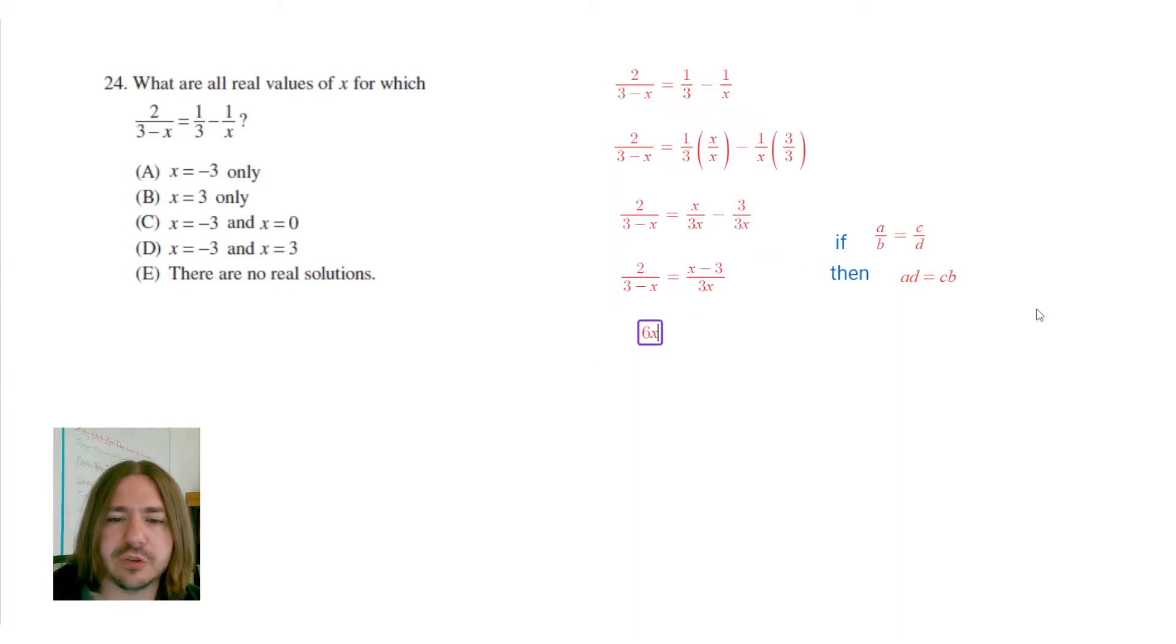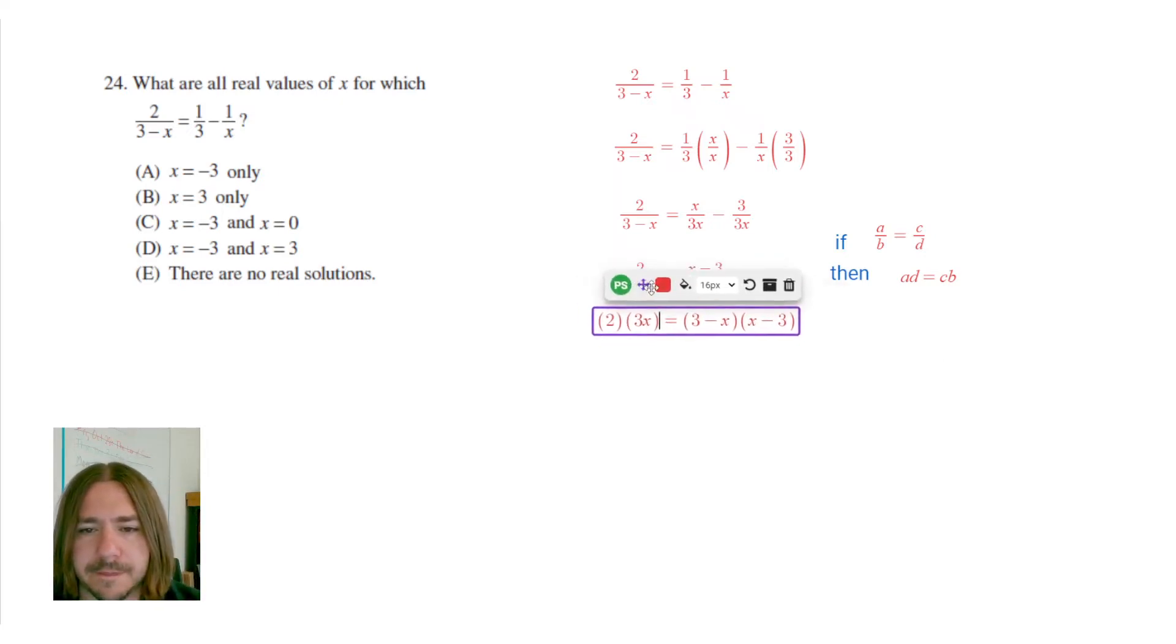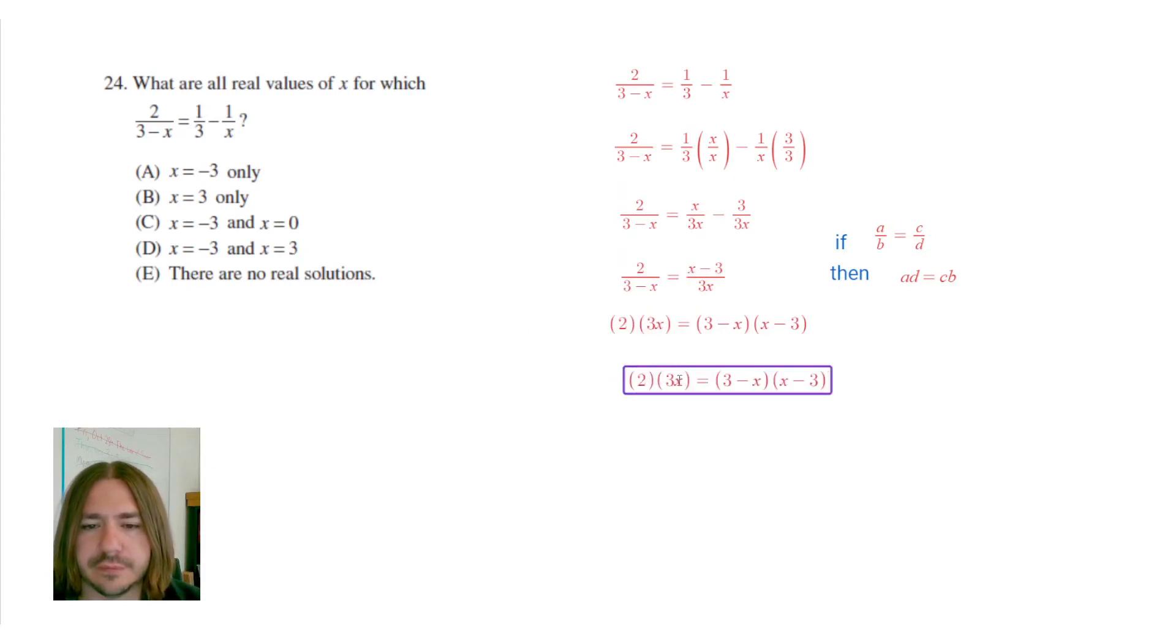We're going to multiply 2 times 3x, which would be 6x, and I'll write it out separately, 2 times 3x. And then on the right-hand side, we'll have 3 minus x times x minus 3. So I do need to multiply all this out and simplify. So here we have 6x on this side. On the right-hand side, I do need to FOIL or use the distributive property to multiply those binomials.